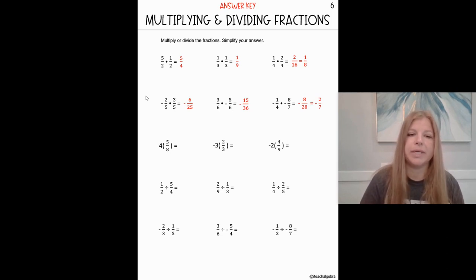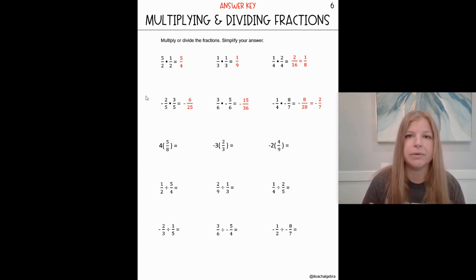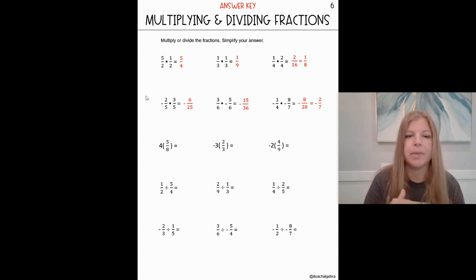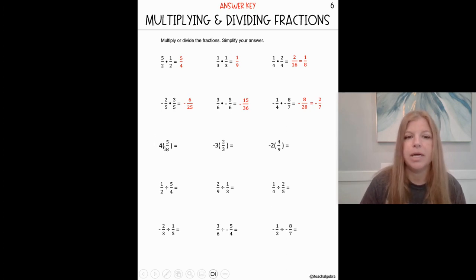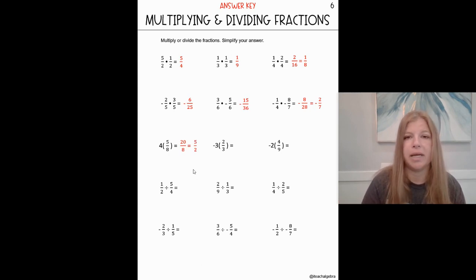The next three have a whole number or integer multiplied by a fraction. Remember that four is really like four over one, negative three is really negative three over one, or negative two is really negative two over one — you can always put one in the denominator. So this four is just getting multiplied by the five in the numerator. If I imagine a fraction with a one underneath, I would do four times five is twenty, and I would have twenty over eight. Then I can simplify — twenty over eight is divisible by four — and I end up getting five halves.